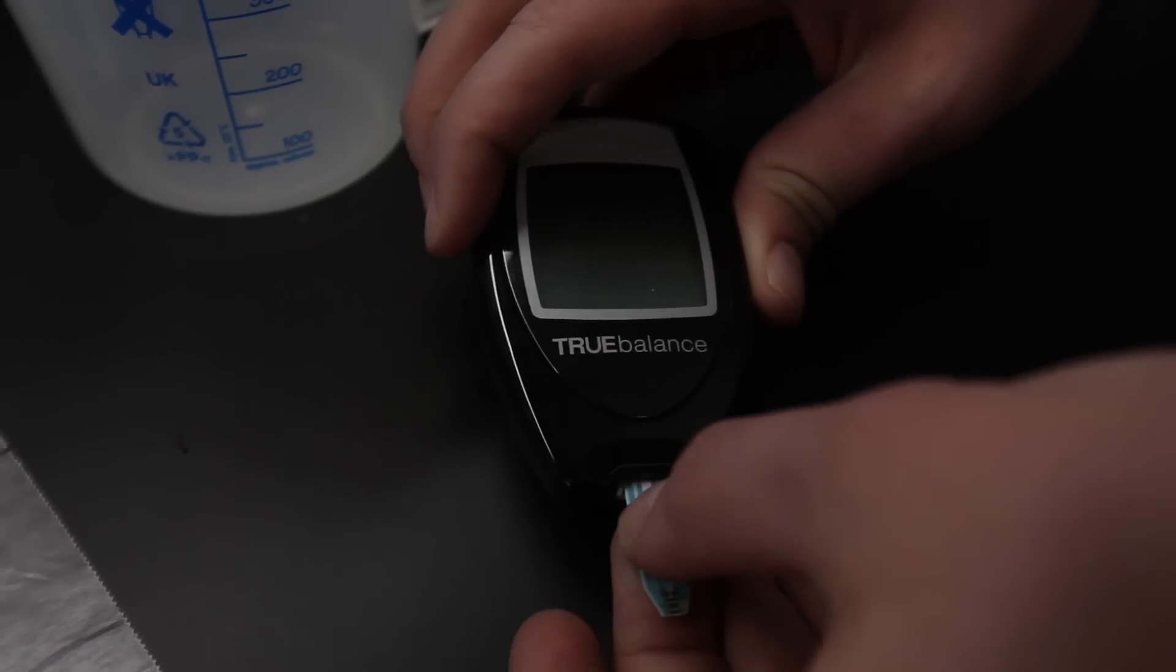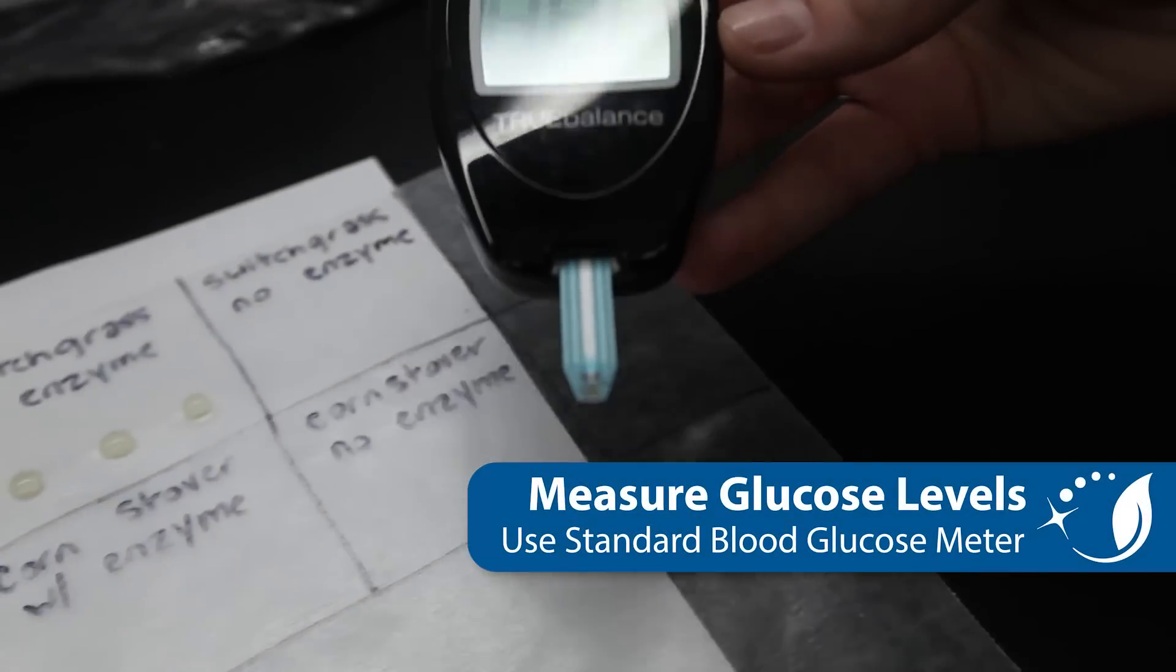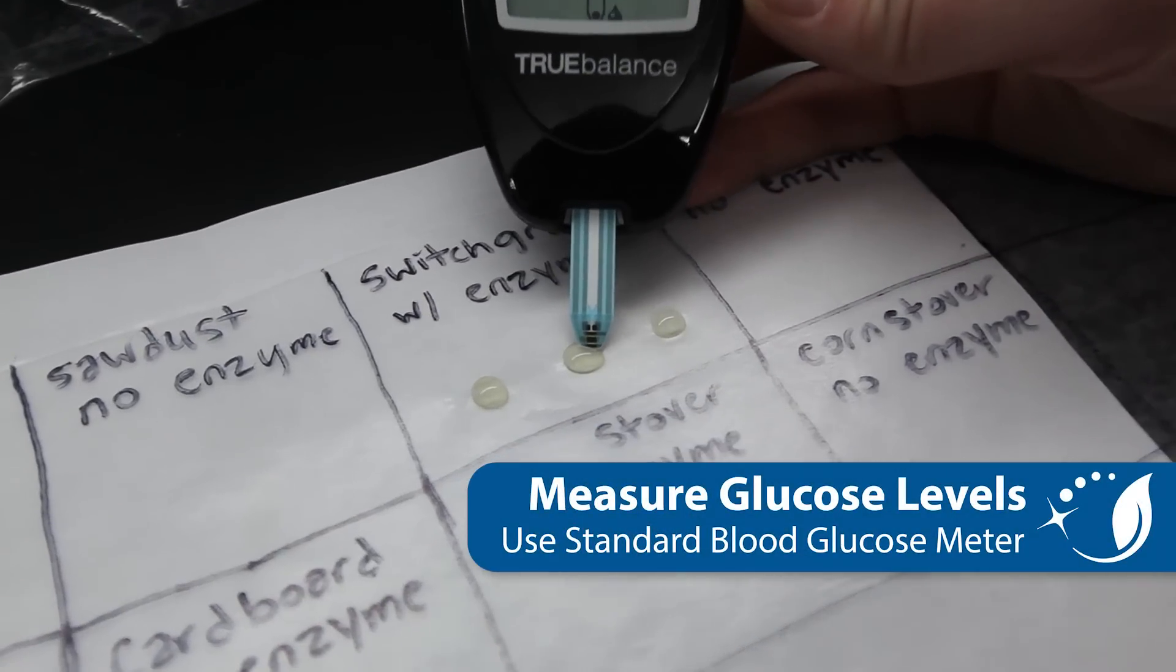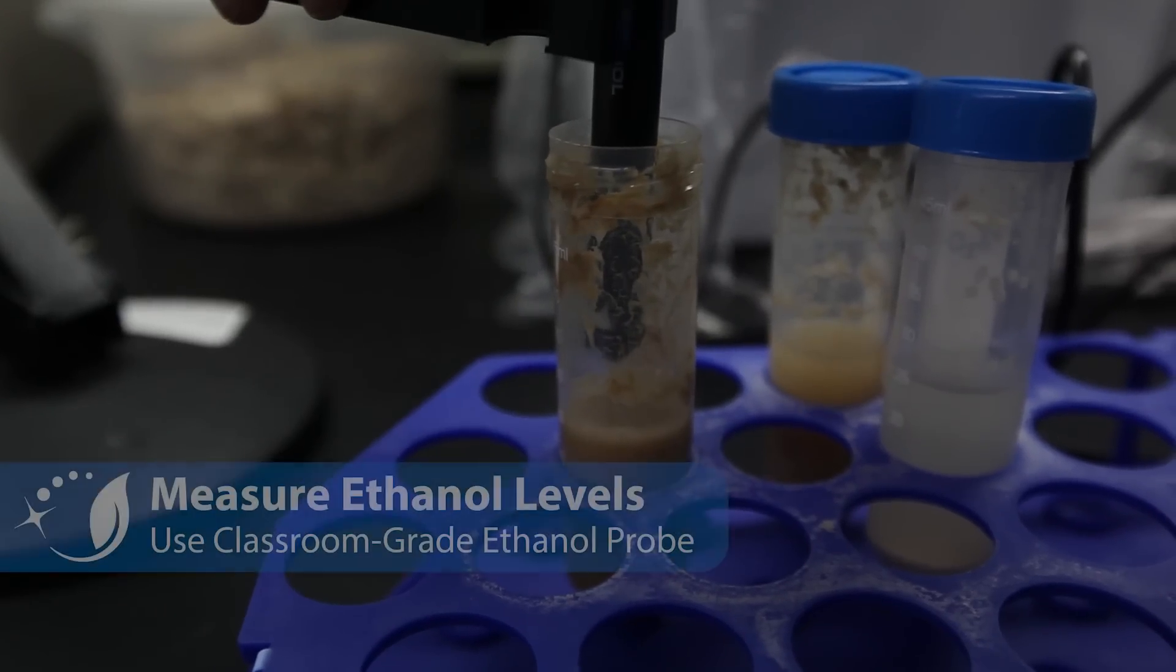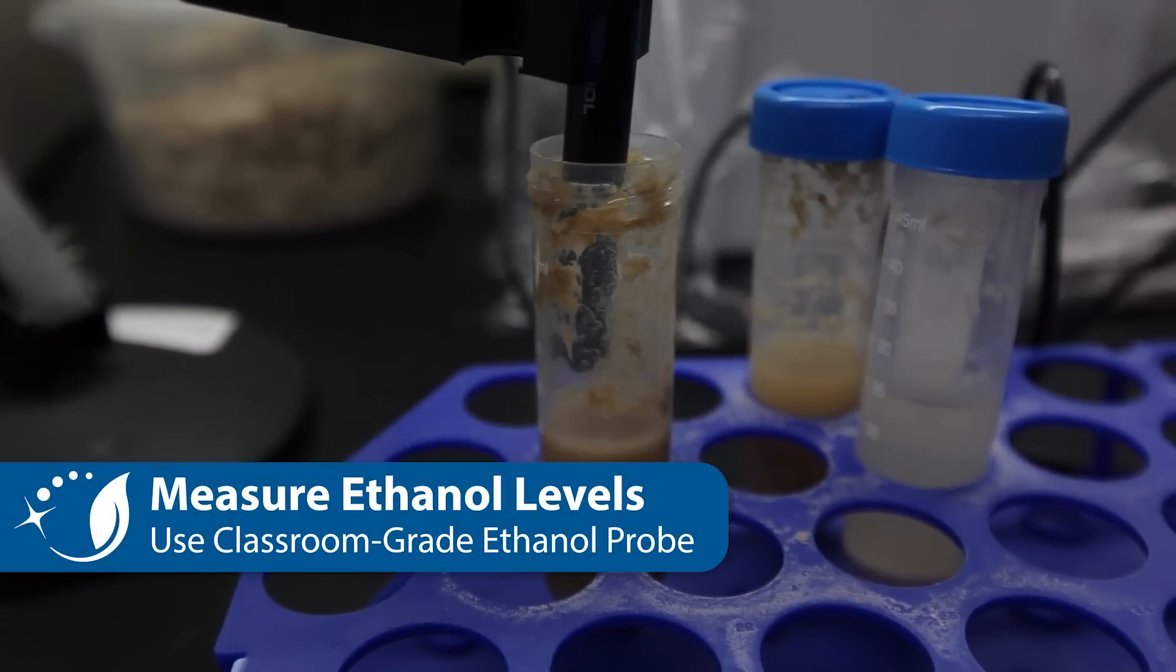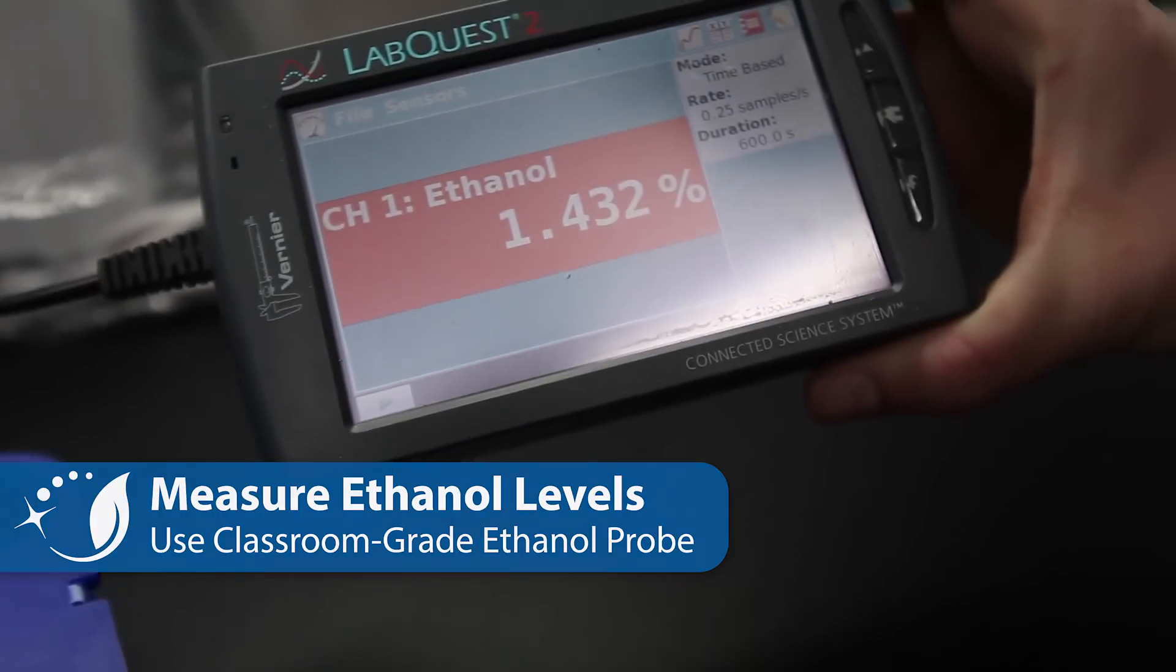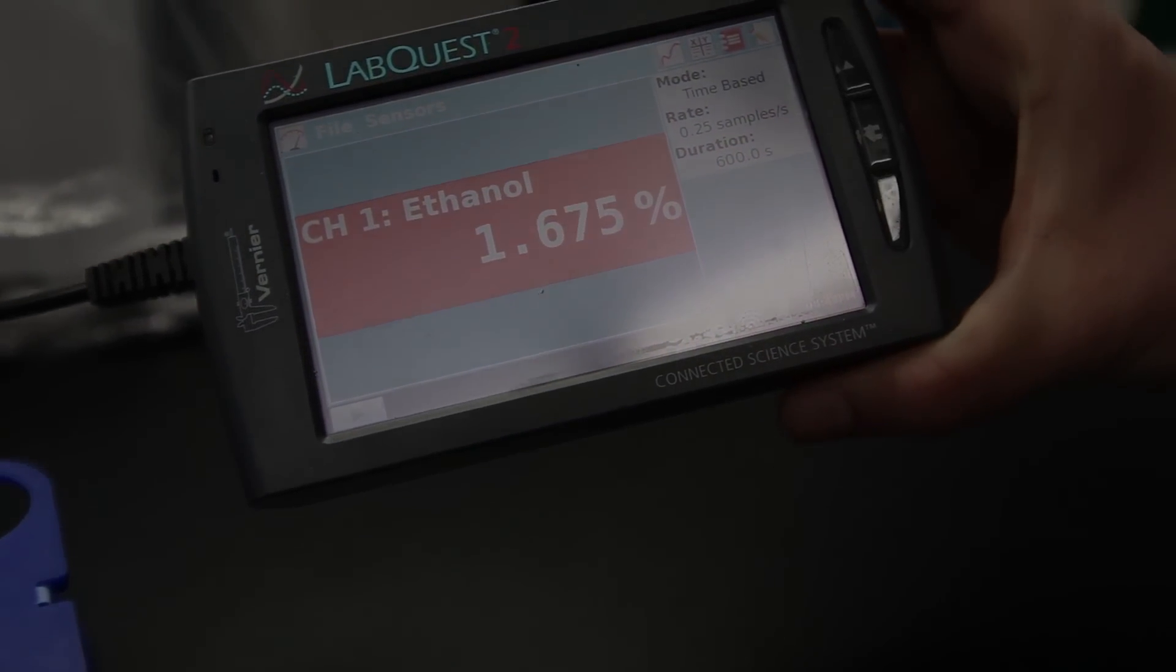Before and after each stage in the process, it is important to take glucose and ethanol measurements. A standard blood glucose meter and classroom grade ethanol probe will work well. This will help you track the matter and energy transformations across the entire process. The goal of the lab is to chart how various types of biomass and pre-treatment techniques influence the amount of ethanol produced.